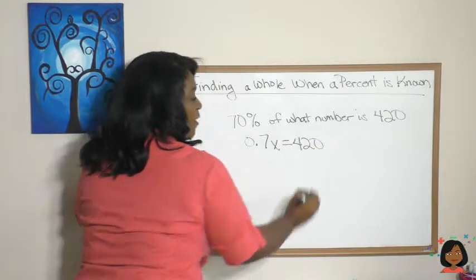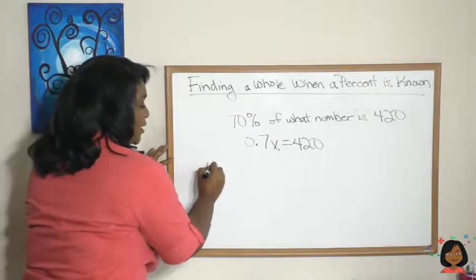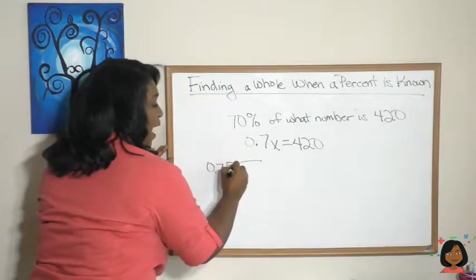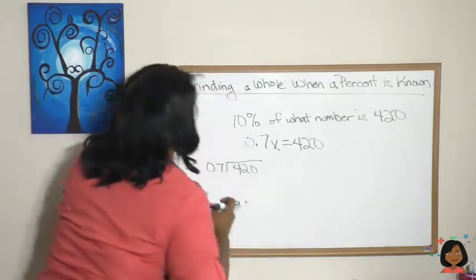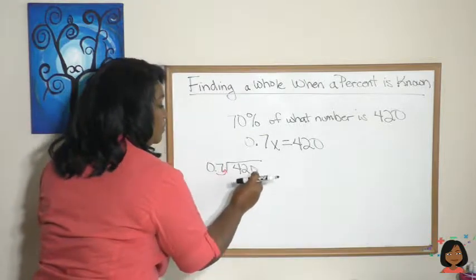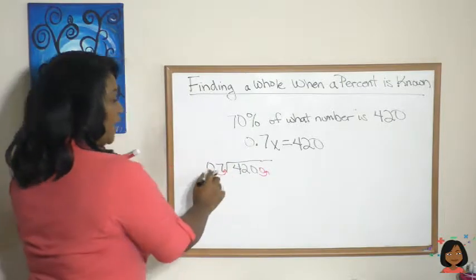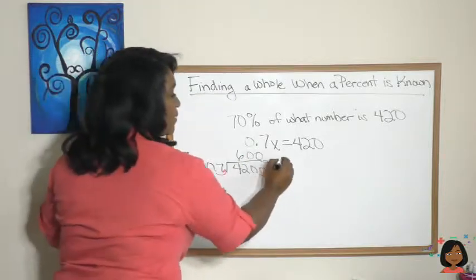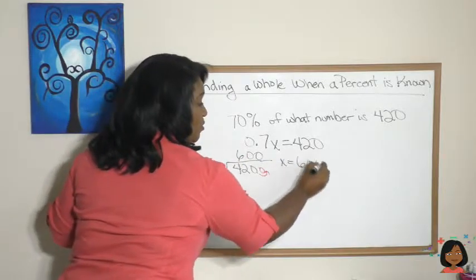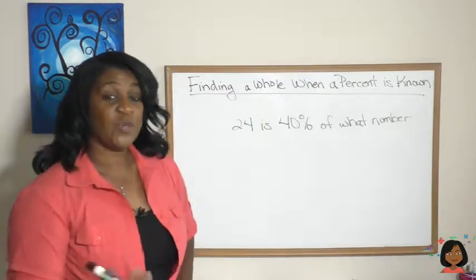There I have my 420. Now we just have a division problem, but we have to clear that decimal out of the problem by moving it one to the right. Let me get my red—boom, boom. We've got a 6, a 0, and a 0, so x is 600 and that's your answer.